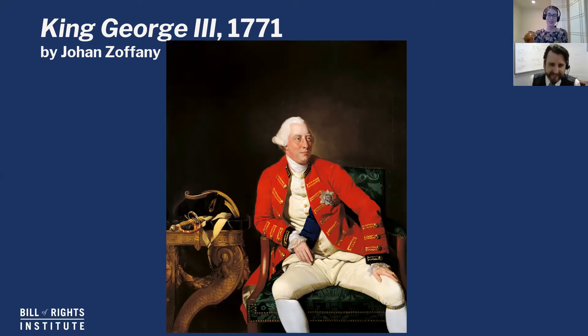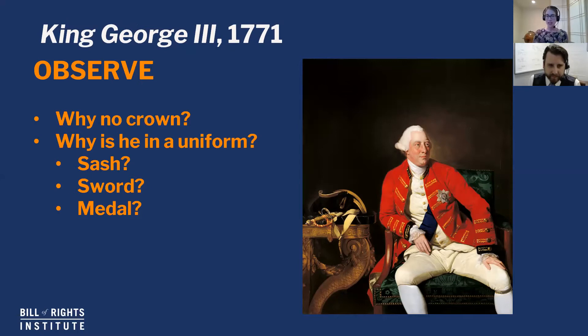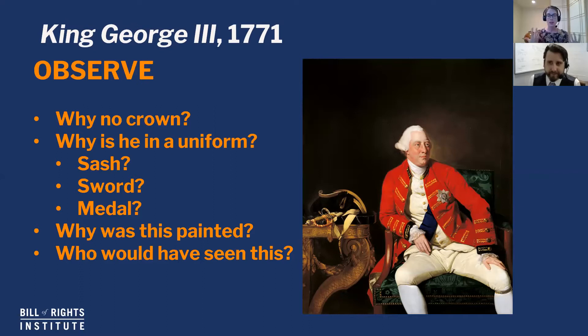So just some basic questions based on what we're observing: why isn't he wearing a crown? What's going on with the uniform? He has a sash, a sword, and it looks like a medal on his breast. Why was this painted? If he's a king, there are probably other portraits of him, so why this particular one — and who would have seen it? That might give us more clues as to why he's depicted this way.